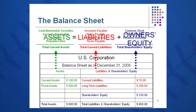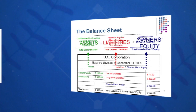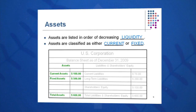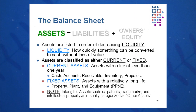The key thing to remember about the balance sheet is assets equal liabilities plus owner's equity — a key equation you must take with you from this course. Assets are listed in order of decreasing liquidity: current assets are at the top of the balance sheet, and longer-term assets are at the bottom of the left side.